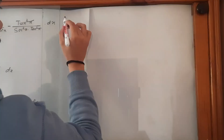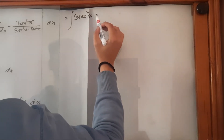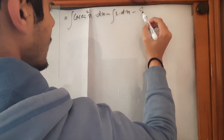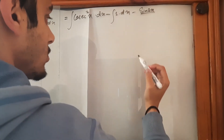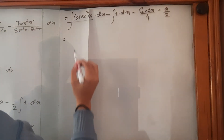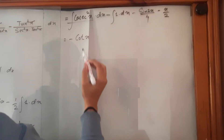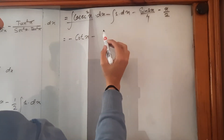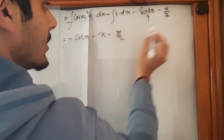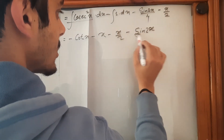For the first part, integrating cosec square x minus 1 dx: the integral of cosec square x is minus cot x, and the integral of 1 is x. Combining everything, the result is minus cot x minus x minus x upon 2 minus sin 2x upon 4.